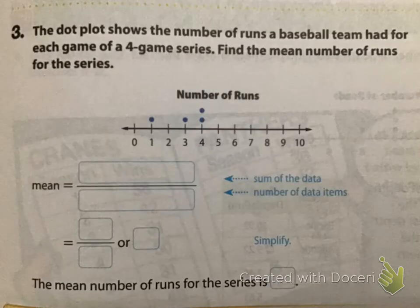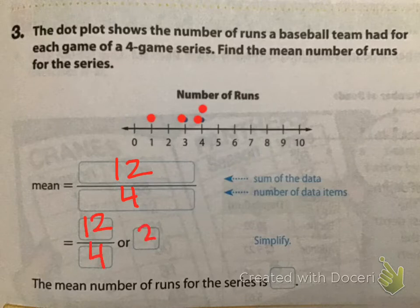Let's look at this one. The dot plot shows the number of runs a baseball team had for each game of a four-game series. Find the mean number of runs for the series. We have four different data items, so we know that we're going to be dividing it overall by four. Then we have to add the data together. So, one plus three is four, plus four is eight, plus four is 12. So, I get 12 fourths or simply three. The mean number of runs for the series is three.